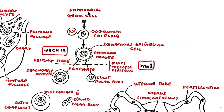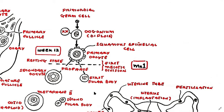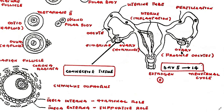Female germ cells proliferate by mitosis in the ovaries to form a large number of oogonia. These cells are diploid, containing two X sex chromosomes, and develop into haploid mature oocytes via the process of oogenesis, which is similar to spermatogenesis but with significant differences. The ovaries are a pair of organs that produce oocytes and reproductive hormones, lying near the openings of the uterine tubes, also known as the fallopian tubes or oviducts, that extend from the uterus.